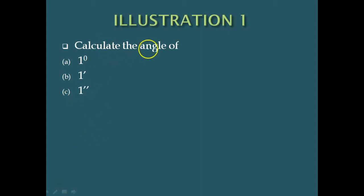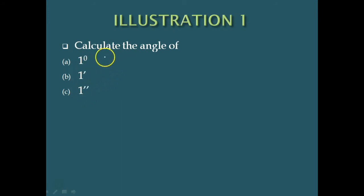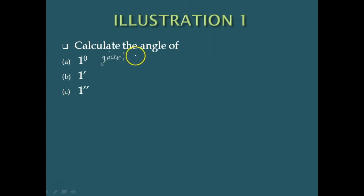The first problem is to calculate the angle of 1 degree, 1 minute of arc, and 1 second of arc. Before proceeding, they have given us that 360 degrees is equal to 2π radians.